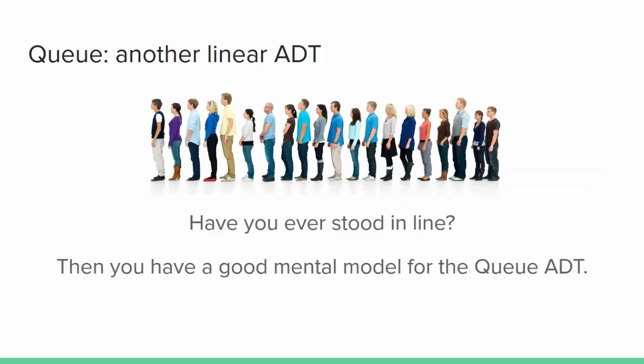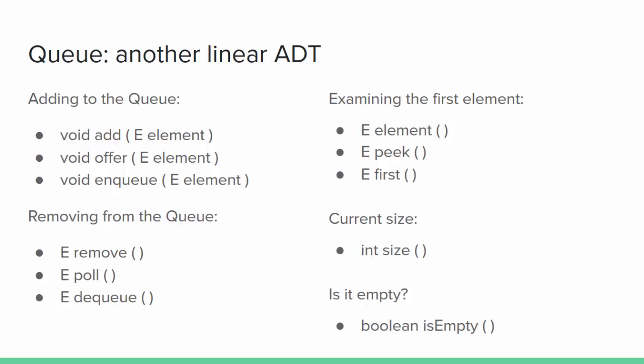Another linear abstract data type is the queue. If you've ever stood in line for anything you have a good mental model for the queue. When you join a line you do so at the rear, and the person at the front who has patiently waited will be next. New people are always added to the rear and removed from the front — they're served in first-in first-out, or FIFO, order. Unfortunately names for queue operations aren't as standardized as they are for stacks, so you'll need to carefully read and write clear documentation for any queue interfaces you use.